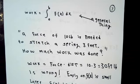10 times 3 is 30, so the answer is 30 foot-pounds. But that's wrong.